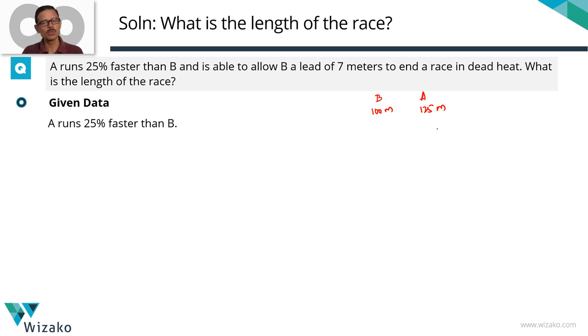Let's bring it to its least form. Both these numbers are divisible by 25. Divide both by 25. So when B runs 4 meters, A will run 5 meters. So the ratio of the speeds, ratio of the distance covered by them in a given time is 4 to 5 for B and A.